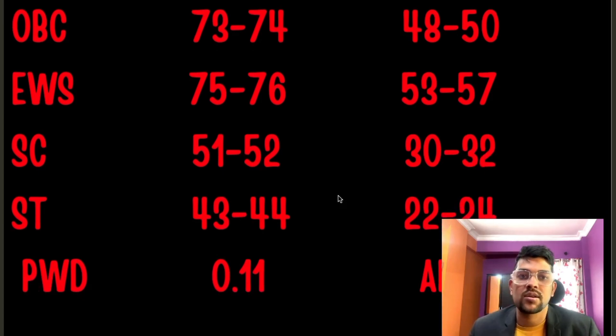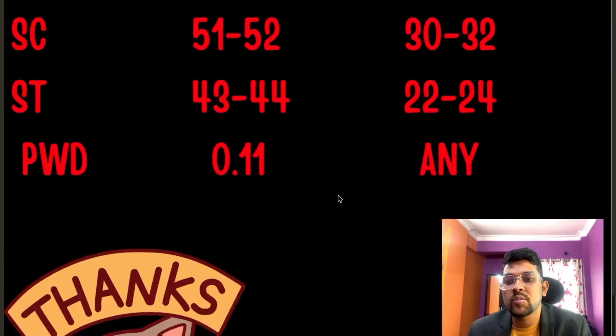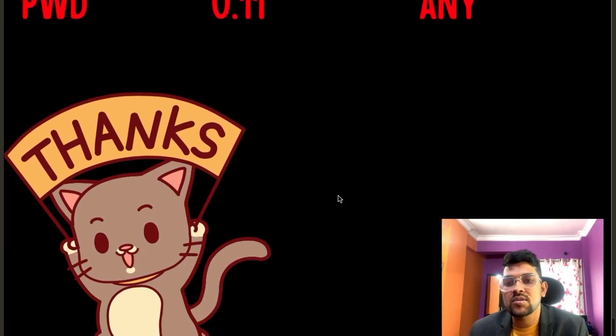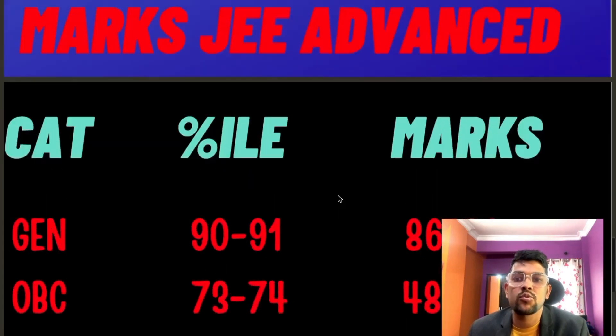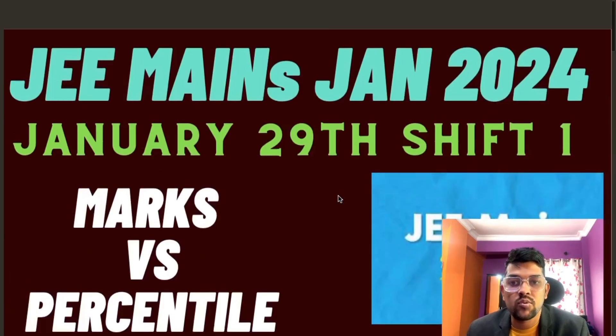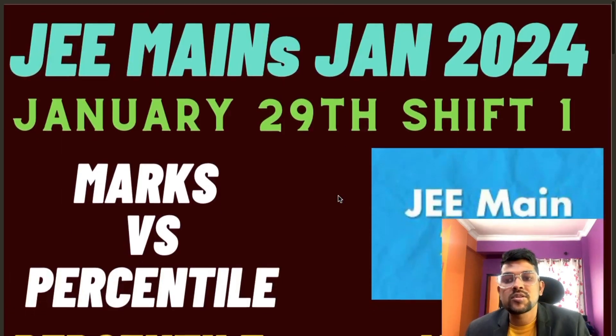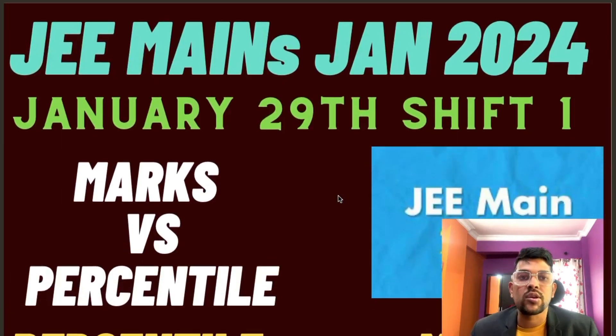For SC category, 30 to 32 marks is required. For ST, 22 to 24 marks. For PwD, you just need to reach the center. This was the complete information regarding the marks, percentile, and expected cutoff of JEE Mains Session 2 examination.